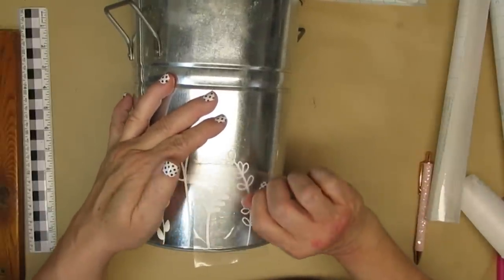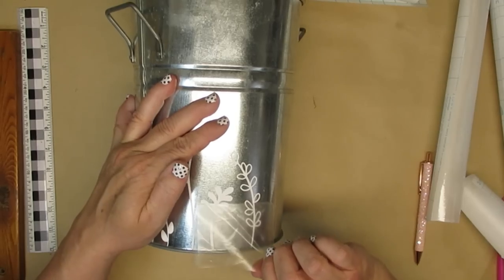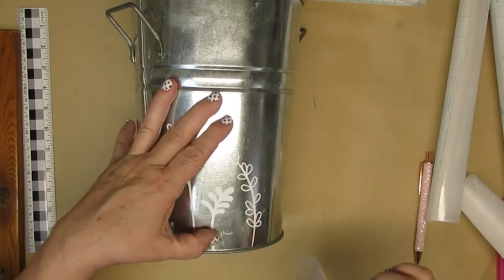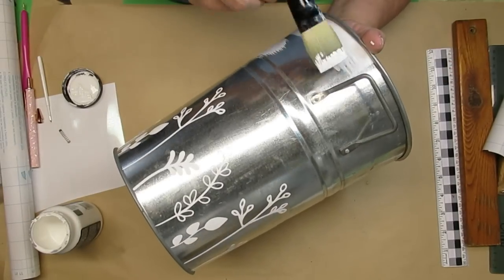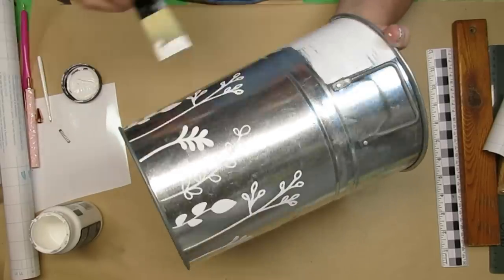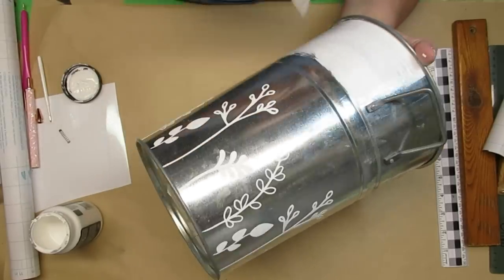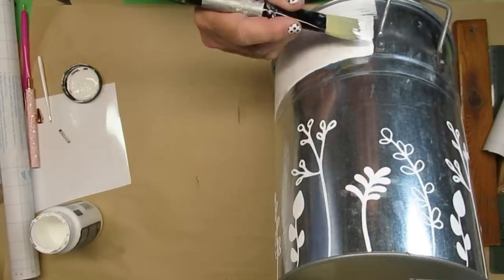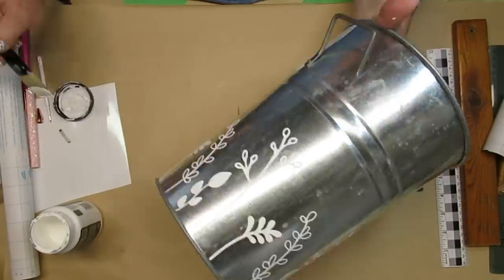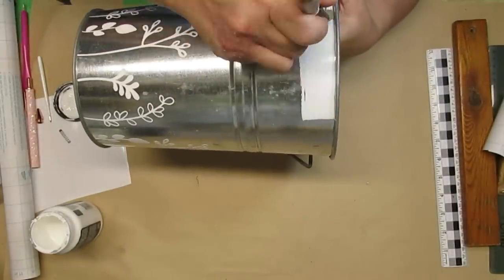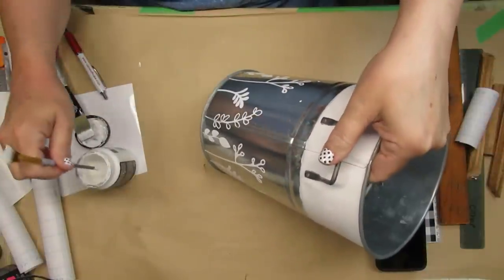I cut out the pattern four times so I would be able to repeat it all the way around the tin. Once it was complete, I'm using some Craft Smart white chalk paint and I'm going to just paint the top part of the bucket just to that first lip. I did go over the top with two coats.